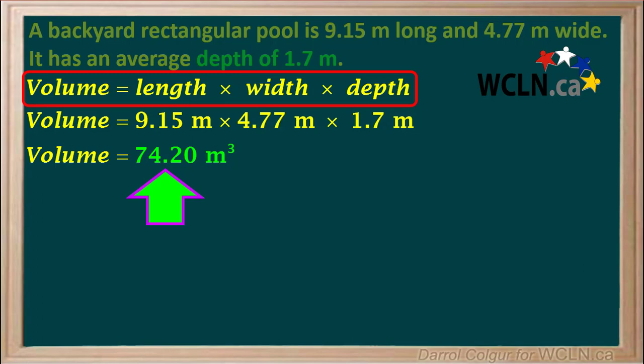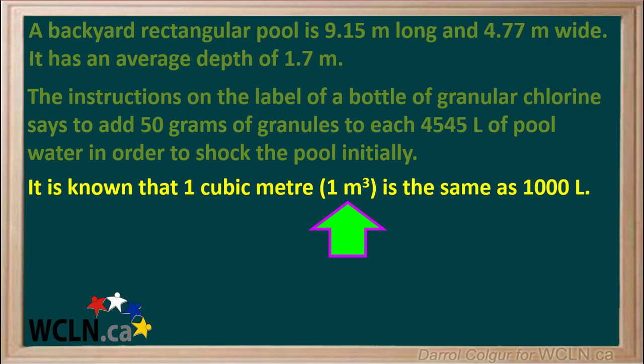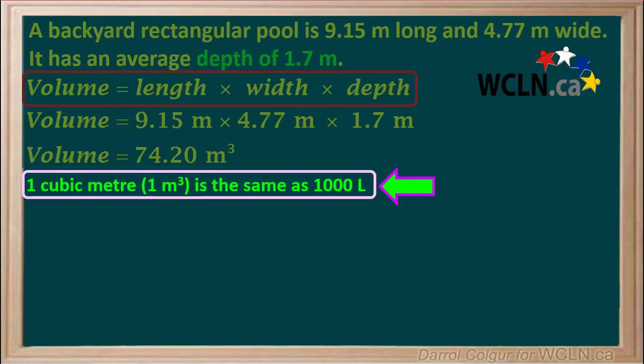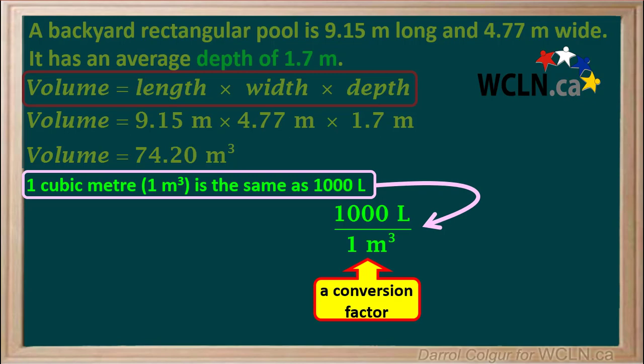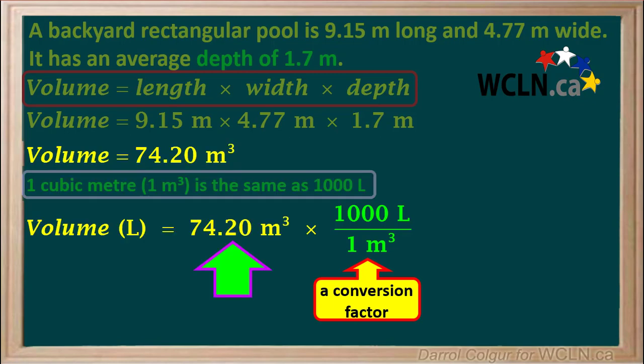So the volume of water in our pool is 74.2 cubic meters. But because the instructions on the bottle dealt with liters of water, we must change our volume from cubic meters to liters. We were told earlier that a volume of 1 cubic meter is the same as 1,000 liters, so we'll make a note of that here and write a conversion factor showing this. To get the volume in liters, we'll multiply 74.20 meters cubed by the conversion factor 1,000 liters per 1 meter cubed.